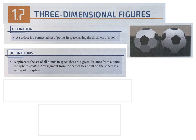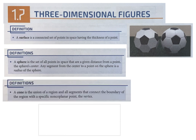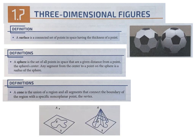A cone is the union of a region and all segments that connect to the boundary of the region with a specific non-coplanar point. They gave examples of what we don't typically think of as a cone. When we think of a cone, we think of an ice cream cone — a circle base going up to a point. But by definition, the base can actually be any region, not necessarily circular.